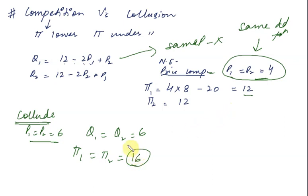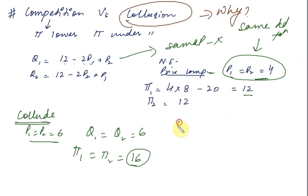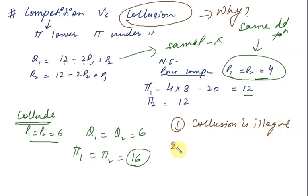Since collusion gives higher profit, why don't firms always collude? There are two or three reasons. One, collusion is obviously illegal. But even beyond legality, the other problem is that firms can have an unsaid understanding without signing an agreement. Even with a verbal understanding, collusion can happen. But the bigger issue is that once they have colluded, a firm may have an incentive to cheat.